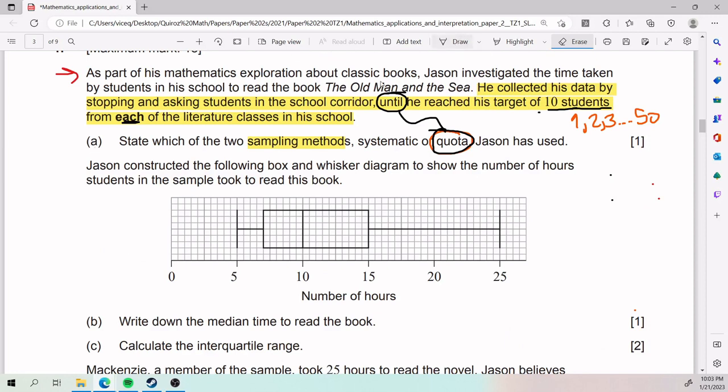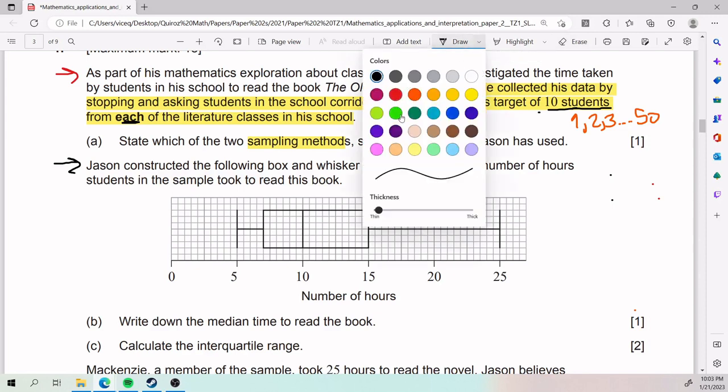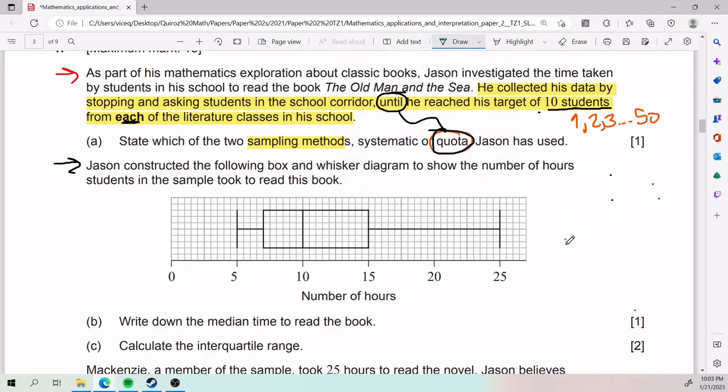Then for part B, they tell us that Jason constructed the following box and whisker diagram to show the number of hours students in the sample took to read this book, and to calculate the median time to read the book. The big thing here is understanding how to read a box and whisker diagram. In any example, this first line here is going to be your minimum, which makes the other line over here your maximum. So it's your minimum and maximum values. What you have in between is Q1, Q2, and Q3.